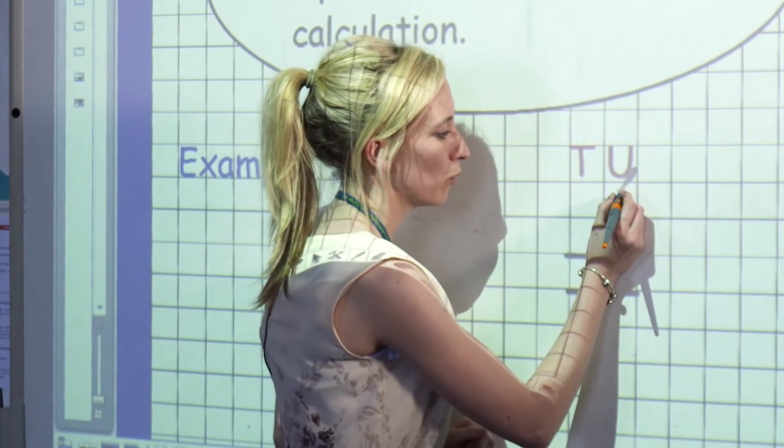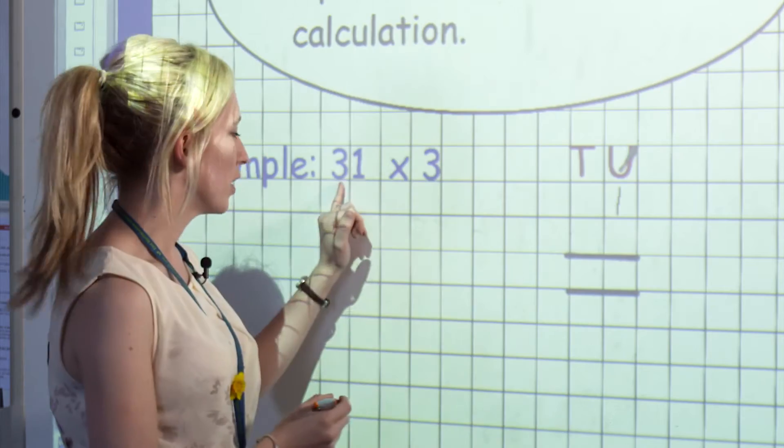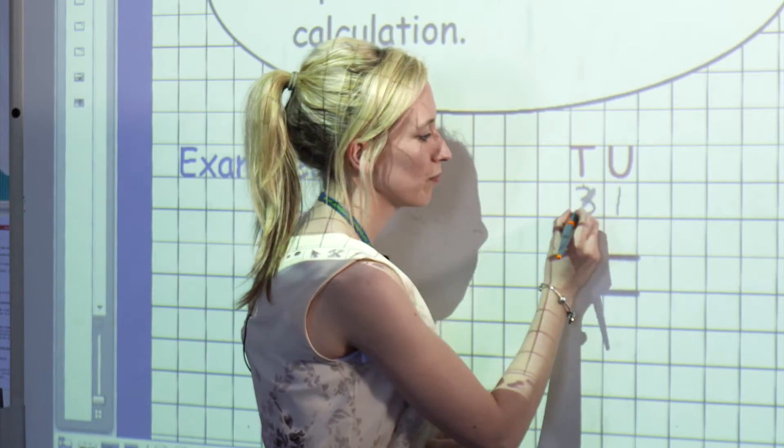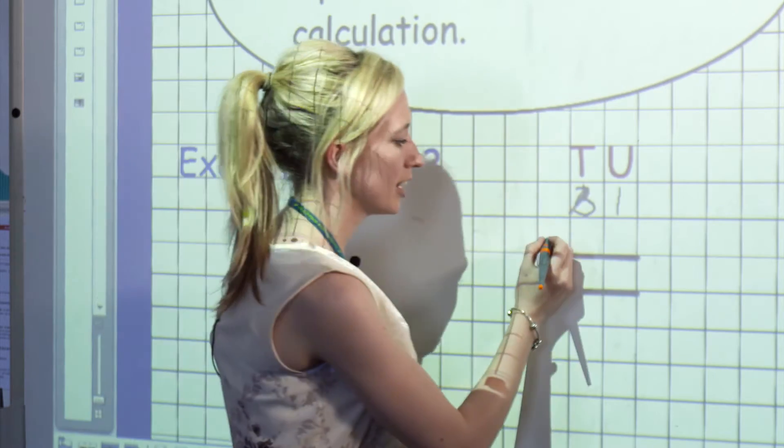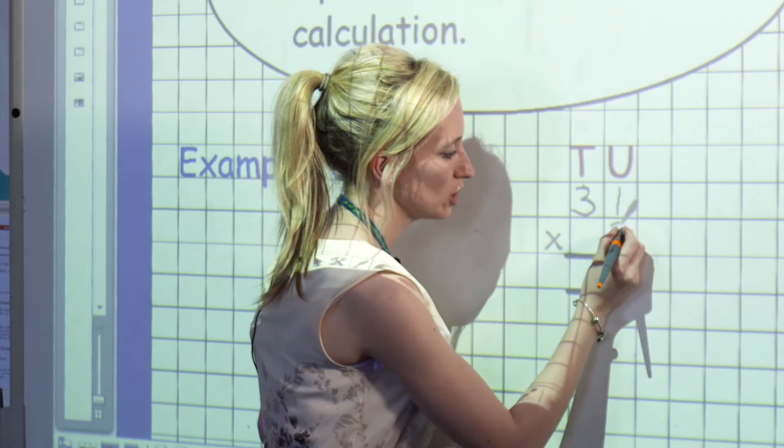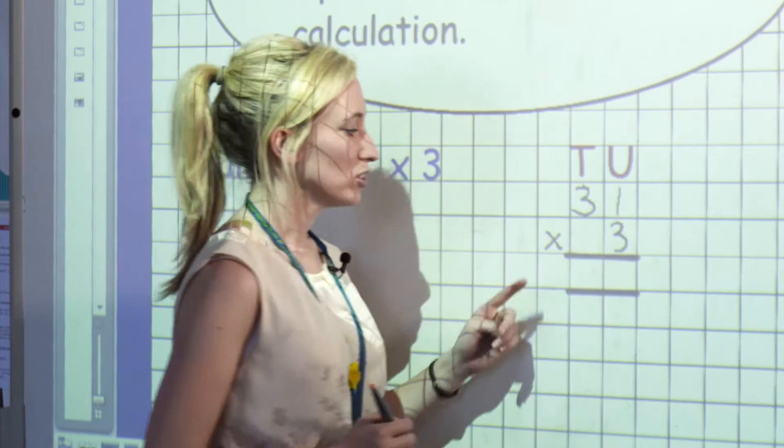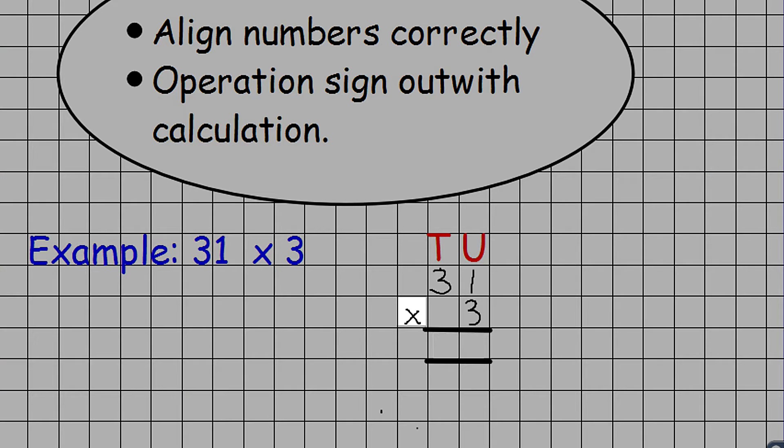We then ensure that the units are in the units column and the tens are kept to the tens column. So we have 1 in our units column and 3 for our tens column. Today we're multiplying this by 3. So we put our 3 into our units column, and we encourage the children to keep the multiplication sign out of the calculation. It's not to go in the units or the tens column, it's to be separate on its own.